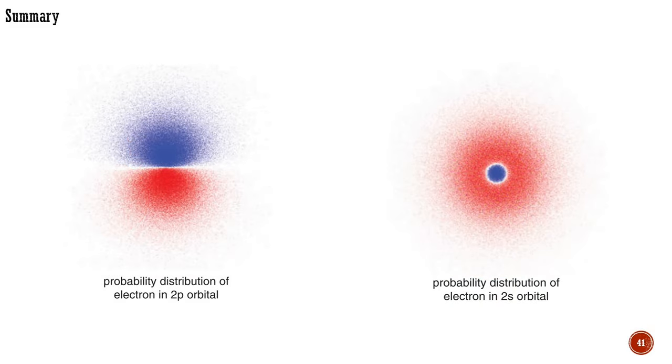Electrons may be found anywhere in an orbital except in a node. In a p orbital containing one electron, this electron may be found on either side but never in the middle. When the orbital contains two electrons, one electron does not stay in one half, and the other electron in the other half, both electrons could be anywhere except in the node.